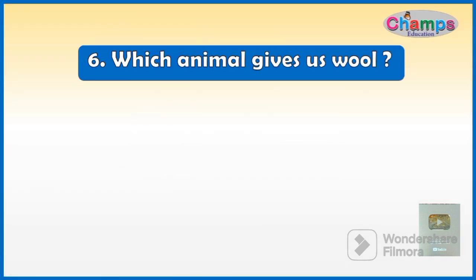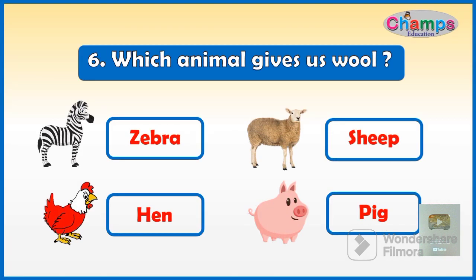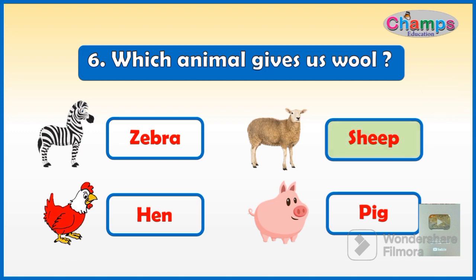Which animal gives us wool? Your options are: Zebra, Sheep, Hen, Pig. And your time starts now. And the correct option is Sheep.